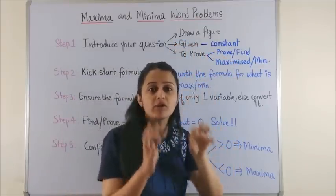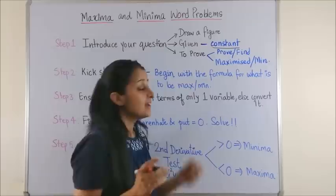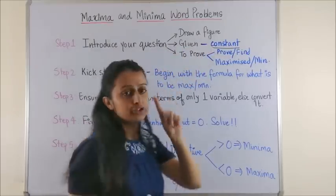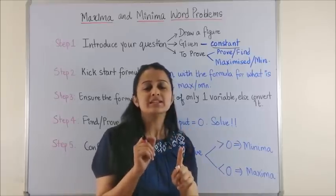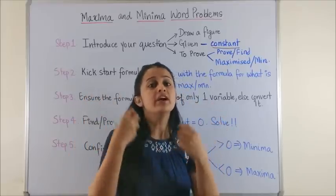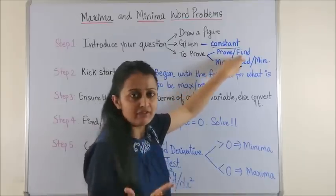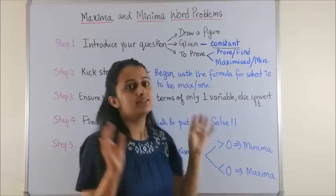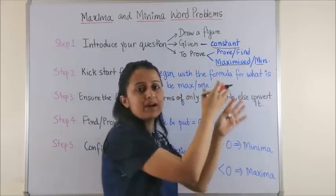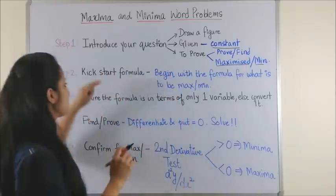Make sure whatever is given in the question, any specific quantity that is given, is treated as a constant. Now for to prove, you are going to actually mention two things: first, mostly in such questions you either have to prove a certain condition or you have to find a certain unknown quantity, so list that what you have to do. Secondly, and most important, list down whatever quantity has to be maximized or minimized.